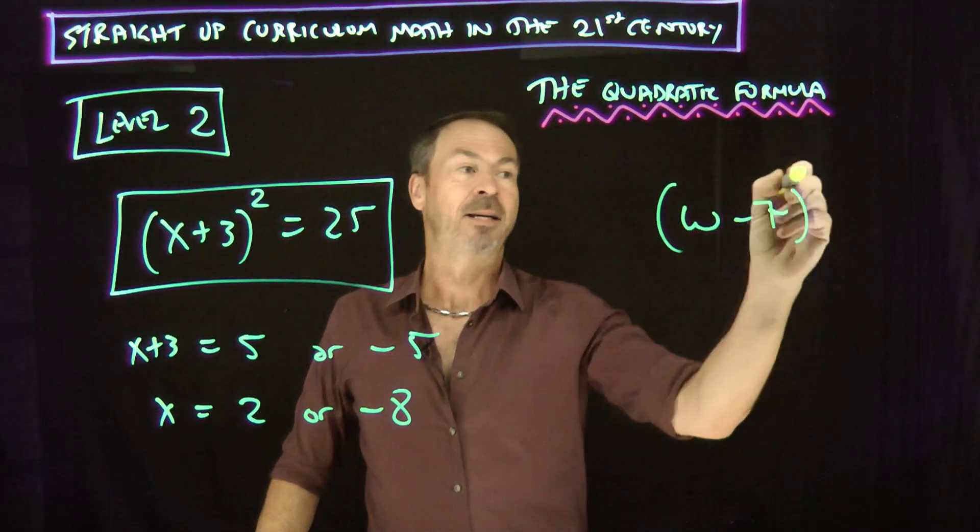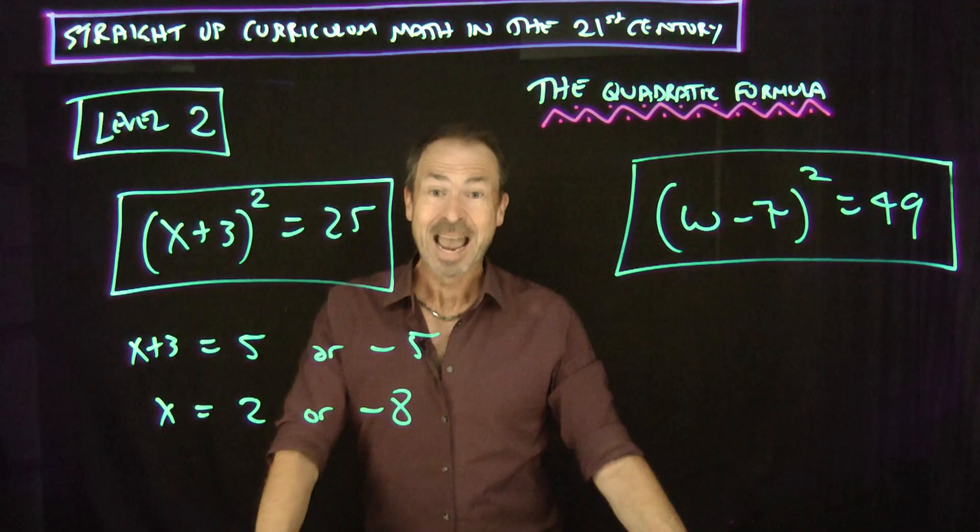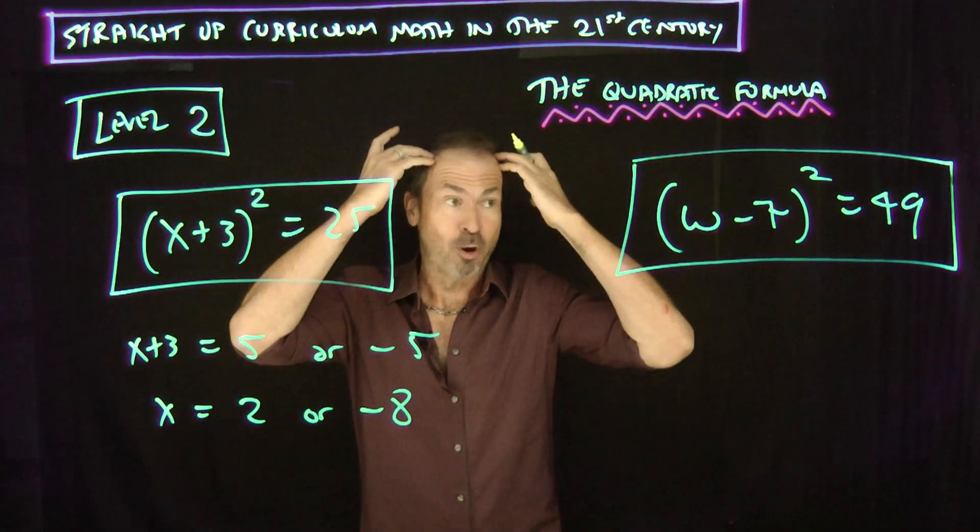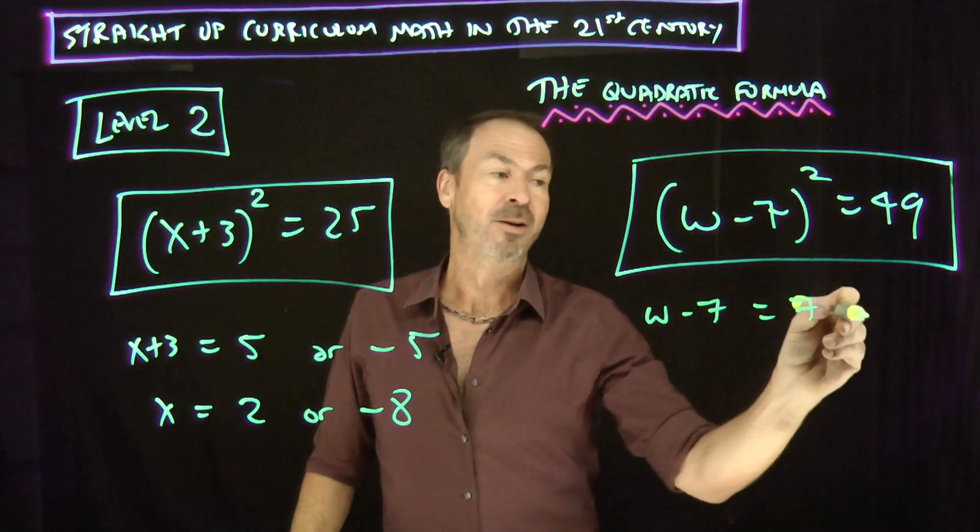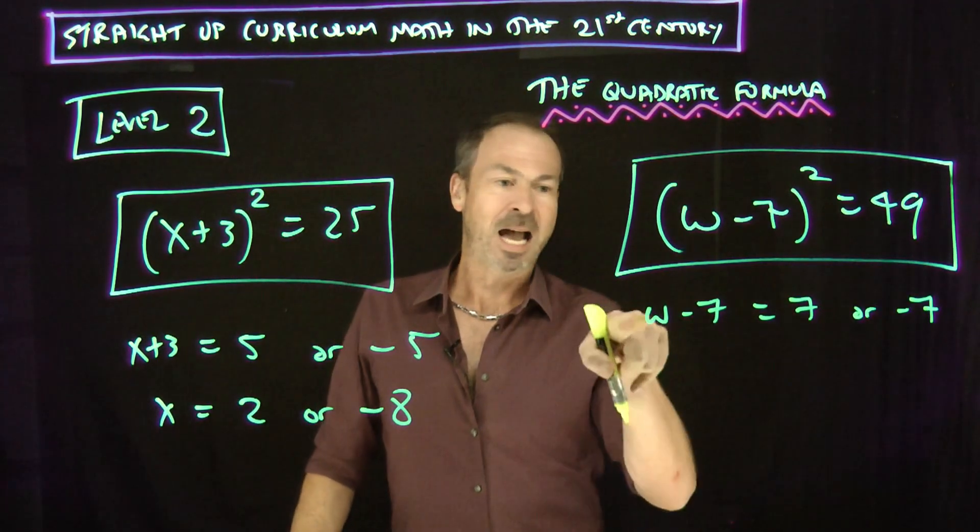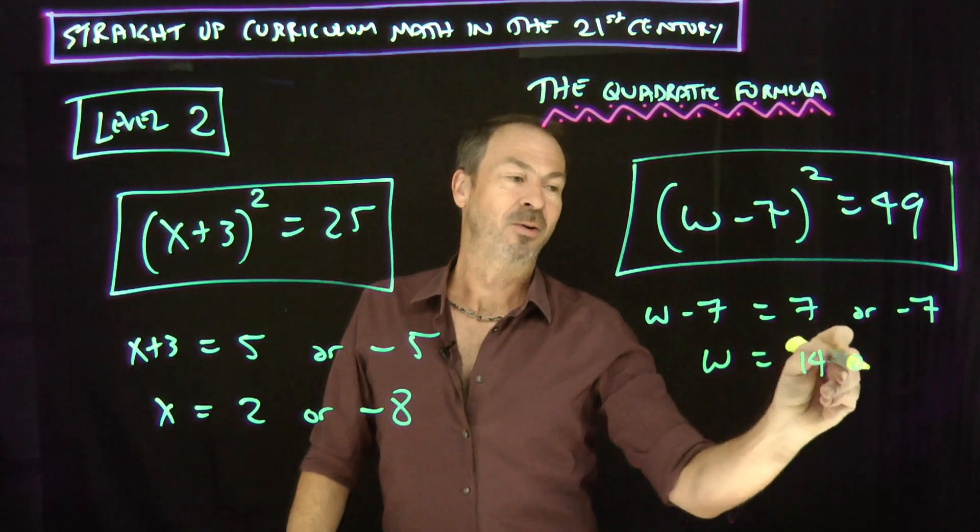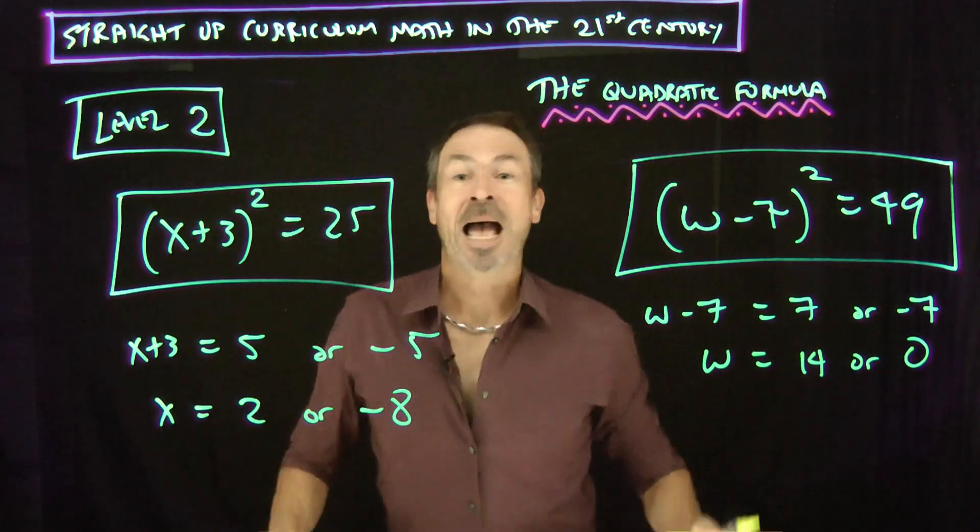What if I was asked to do, say, (w - 7) squared is 49. Can we solve that one? Why yes. Something squared is 49. Logic tells me that something better be 7 or negative 7. If I want w all by itself, let's add 7 throughout. w is either 14 or it's 0. Lovely.